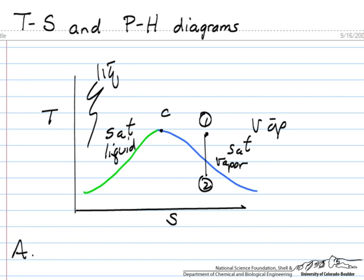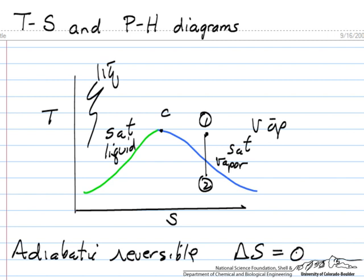And what we're looking at then is an adiabatic reversible process. Adiabatic reversible, delta S is zero, so a constant entropy process is very easy to represent on this diagram.